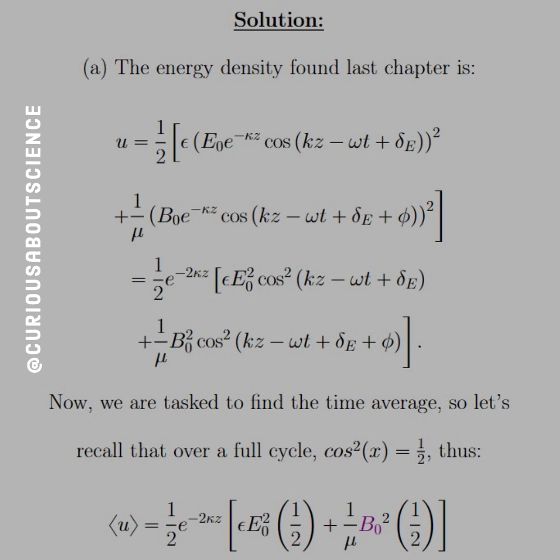Can't do much more with that cosine since we have phase differences there. And now we're tasked to find the time average. Let's recall over a full cycle, cosine squared equals one half. There's a little other trick for that, I'll put that in the notes below, but it's pretty cool.